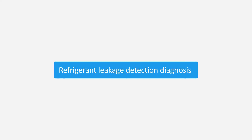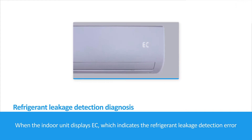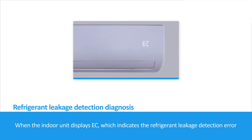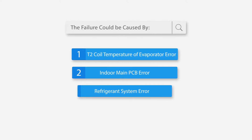Refrigerant Leakage Detection Diagnosis. When the indoor unit displays EC, which indicates the refrigerant leakage detection error, the failure could be caused by: 1. T2 Coil Temperature of Evaporator Error, 2. Indoor Main PCB Error, or 3. Refrigerant System Error.